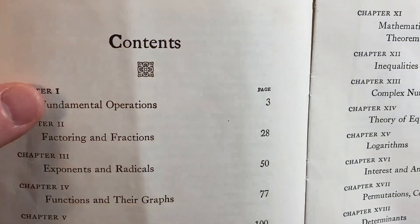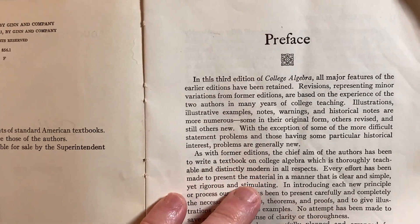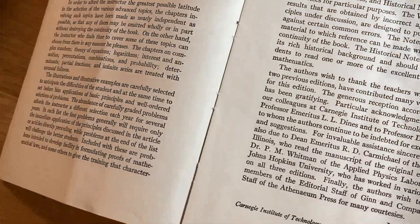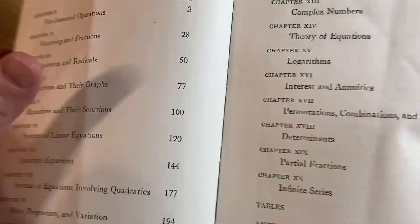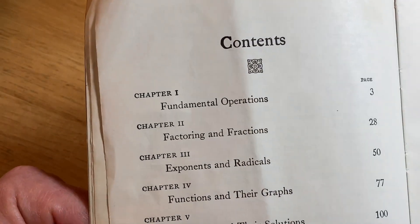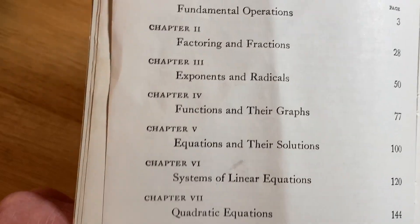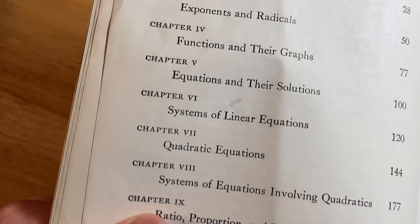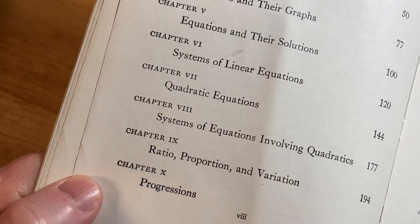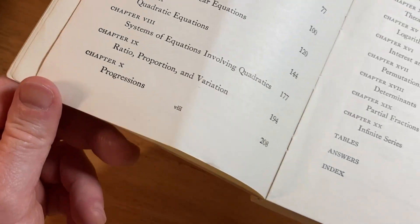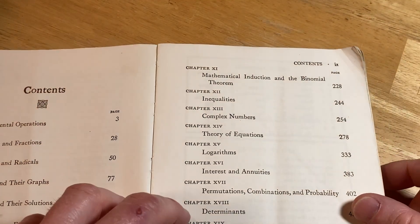And here we go. What's this? I didn't read the preface. Yeah, let's skip the preface. Let's just go to the content. Carnegie Institute of Technology. Wow. Fundamental operations, factoring and fractions, exponents and radicals, functions and their graphs, equations and their solutions, systems of linear equations, quadratic equations, some more systems. Really basic stuff, right? This is the stuff that you learn in algebra.